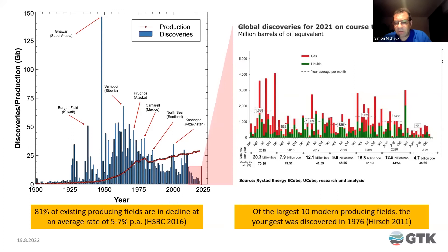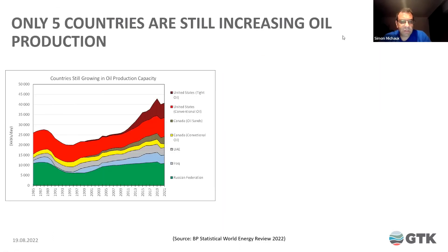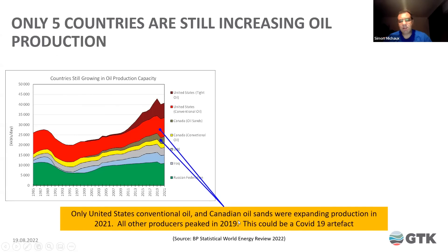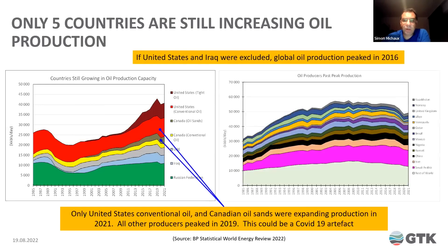Of the largest 10 modern producing fields, the youngest was discovered in 1976. Looking at current oil production, there is a peak in 2018–2019, but this could be an artifact of Covid. Only five countries are still expanding — everyone except the United States conventional oil and Canadian tar sands has peaked as of 2019. Covid has provided the perfect camouflage, and we will not know for another couple of years. If the United States and Iraq were excluded, global oil production would have peaked in 2016. Everyone else is in decline, including Saudi Arabia — that's the pink line.